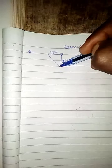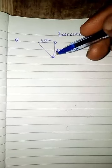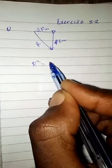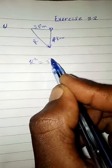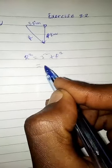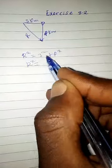To find the displacement from the starting point, we use the Pythagorean theorem. So the result is 3 square plus 4 square.